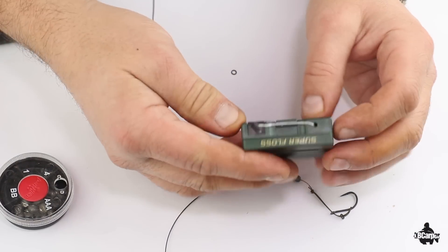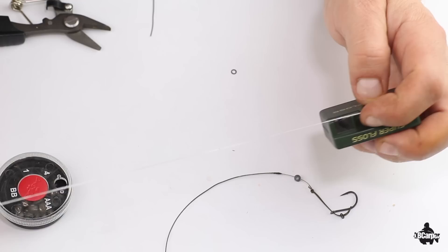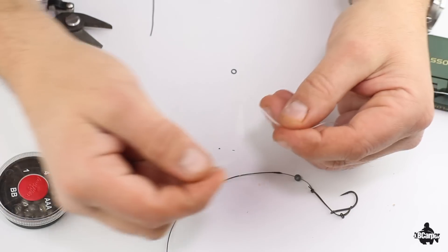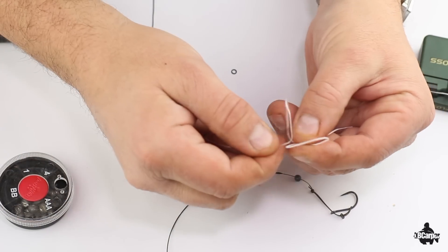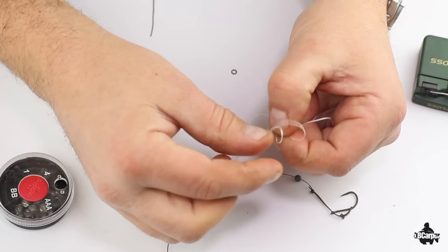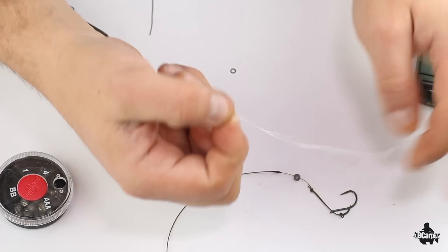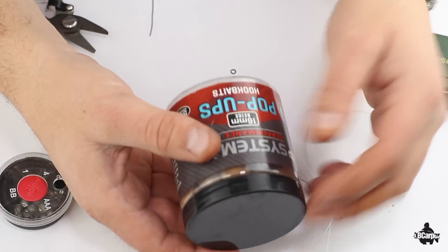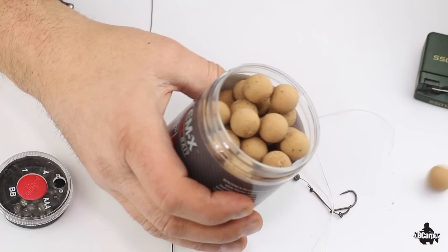Next we want to do is attach our pop-up. Really easy way to do this. One loop, two loops, pull that loop through, create a slip knot, then get your pop-up you want to use.